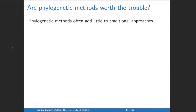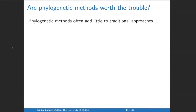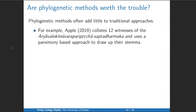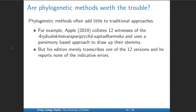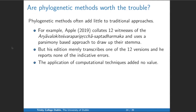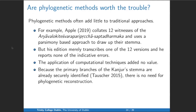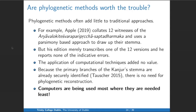Are these phylogenetic methods even worth the trouble? Often there's little benefit over traditional approaches. Apple in 2019 collated 12 witnesses of the Arya Avalokiteshvara Pariprccha Sapta Dharmaka and used the parsimony-based approach to draw up a stemma. But his edition merely transcribes one of the 12 versions — a diplomatic edition, not a critical edition — and he doesn't even report the indicative errors the stemma relies on. The application of computational techniques has not added any value. Because the primary branches of the Kanjur stemma are already securely identified, there is no need for phylogenetic reconstruction. Computers are being used most where they are needed least.